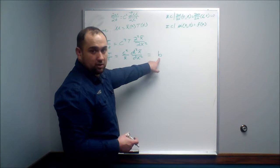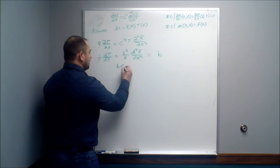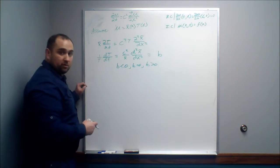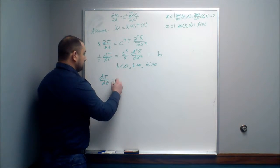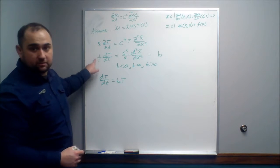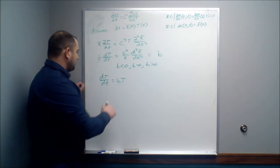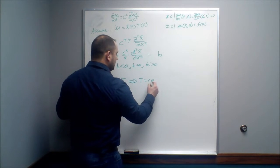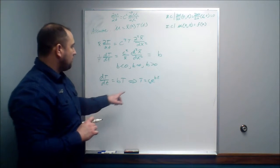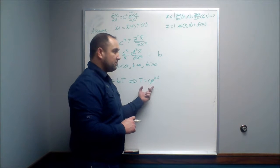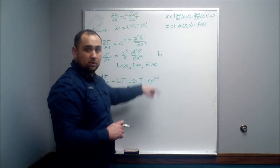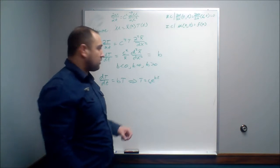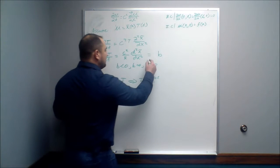We have to look at three cases for b: b less than 0, b equal to 0, and b greater than 0. Looking at the time component, we get dT/dt = b·T, which rearranges to T = c₀·e^(bt). When b is greater than 0, as time progresses this time component blows up to infinity. We never see this happen in reality — nothing ever blows up to infinite heat — so b cannot be greater than 0.